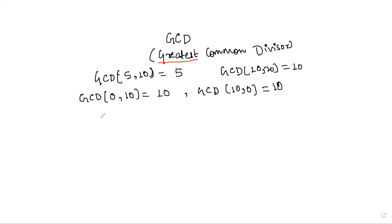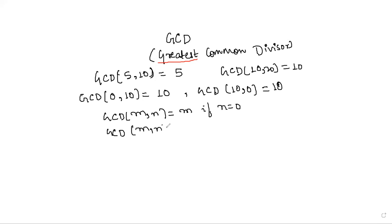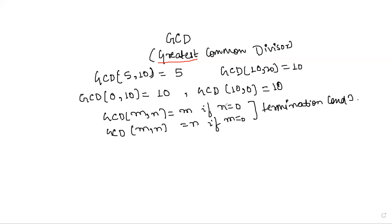You might be noticing something in these two examples. In general form: GCD(m, n) = m if n = 0, and GCD(m, n) = n if m = 0. This is the termination condition we are going to use in our program. Whatever the input given, we have to reach this condition to complete our program.